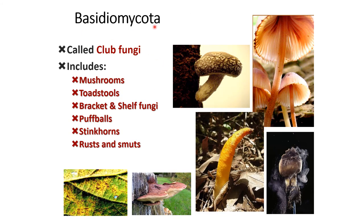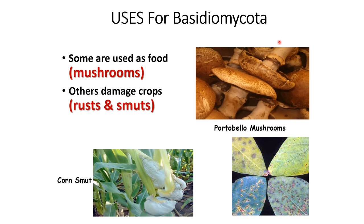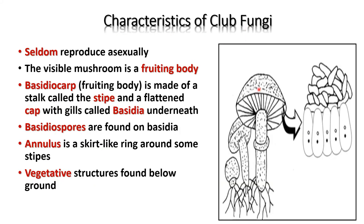Basidiomycota, also called club fungi, include mushrooms, toadstools, bracket and shelf fungi, puffballs, stinkhorns, rust, and smut. Some are used as food like mushrooms; others damage crops like smut and rust. They seldom reproduce asexually. The visible mushroom is the fruiting body called the basidiocarp, made up of a stalk-like stipe and flattened cup-like gills called basidia. Basidiospores are found on the basidia. The annulus is a skirt-like ring around some stipes; the vegetative structure is found below ground.